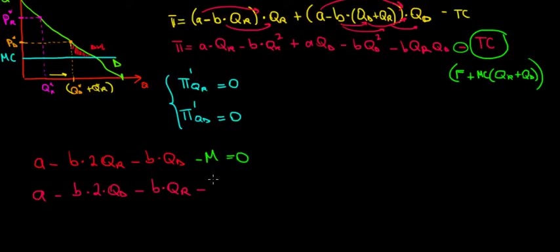Continuing through the cost terms: the fixed cost F is a constant, so its derivative is zero. Marginal cost times qr, differentiated with respect to qd, is zero. Marginal cost times qd, differentiated with respect to qd with the negative sign in front, becomes minus m. So setting this derivative equal to zero gives us our second equation — and that's a system.